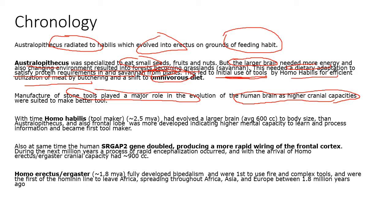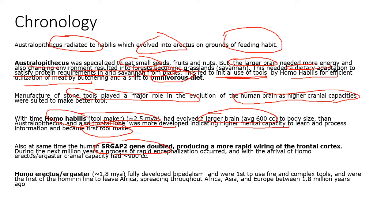Homo habilis, the first tool maker, appeared around 2.5 million years ago with a larger average brain size of around 600cc, compared to Australopithecus at 450–500cc. Habilis had a more developed frontal lobe indicating higher mental capacity to learn. At this same time the SRGAP2 gene doubled in humans, leading to more rapid convolutions of the frontal cortex, giving more surface area through more wrinkles, which is why the human brain started evolving faster during this period.